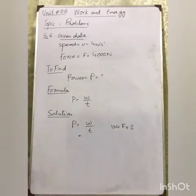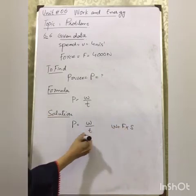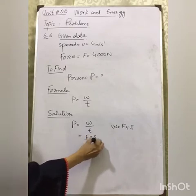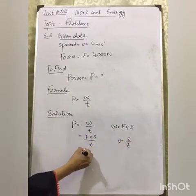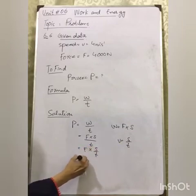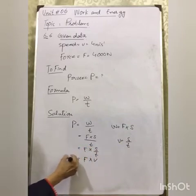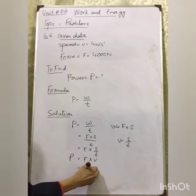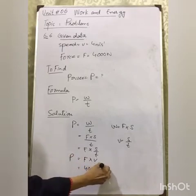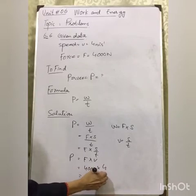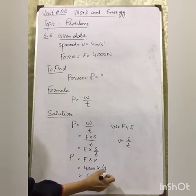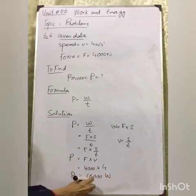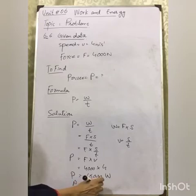Power is equal to work done divided by time. Work done equals force multiplied by displacement. So power equals F multiplied by S divided by time, and since velocity equals displacement divided by time, power equals F multiplied by V. We have force 4000 N, so power equals 16 kW.